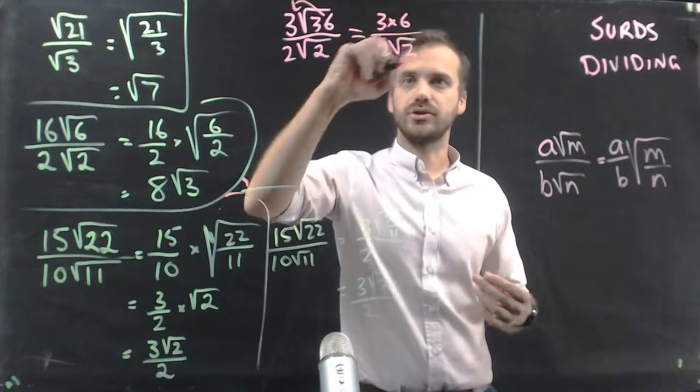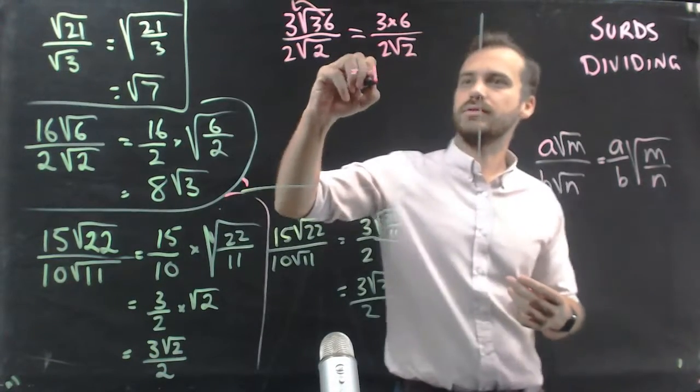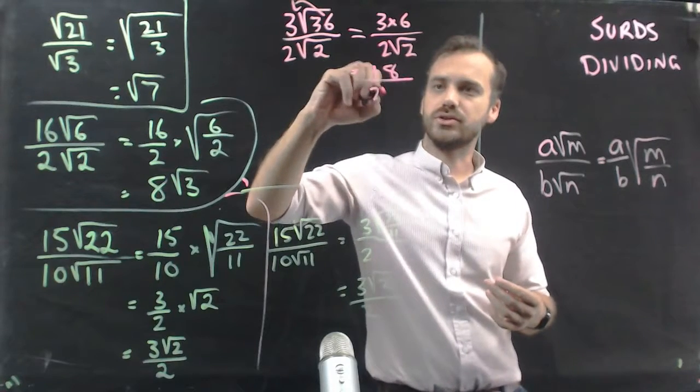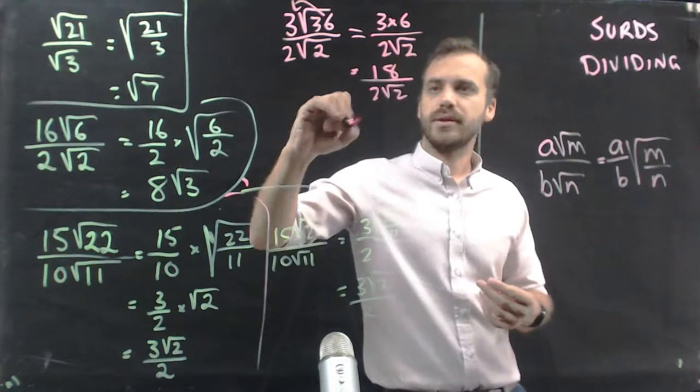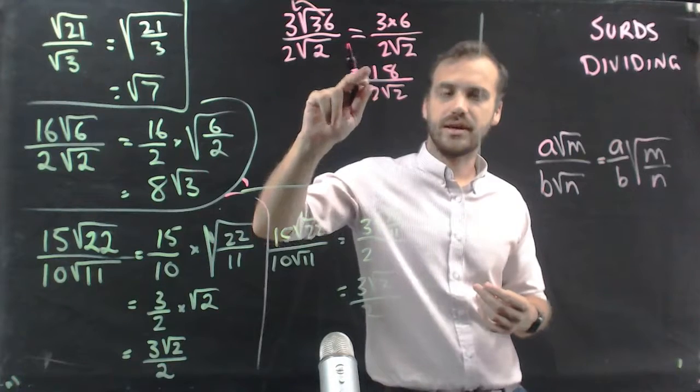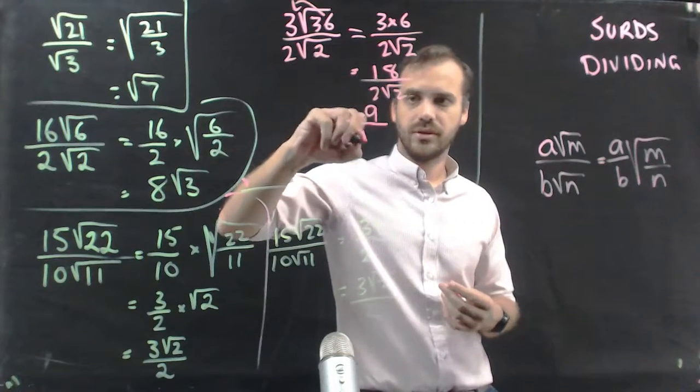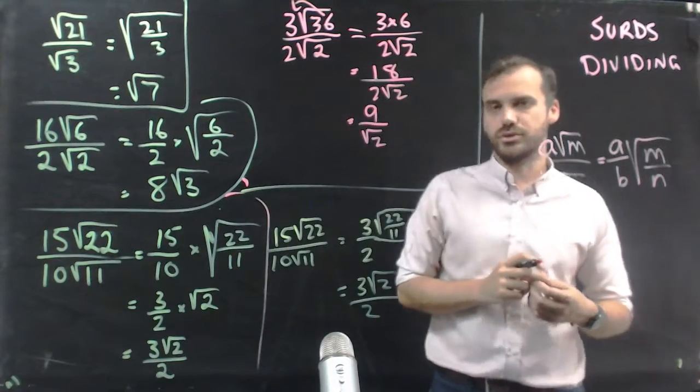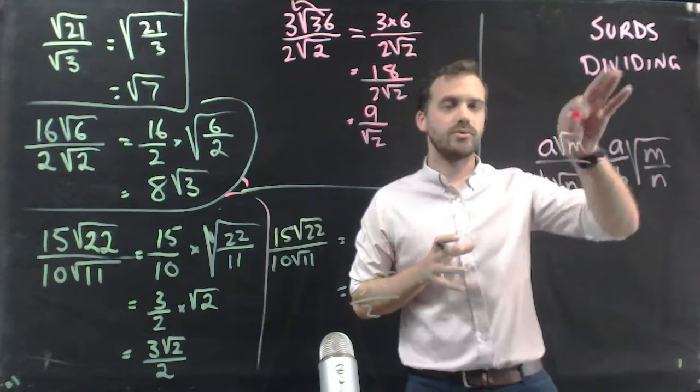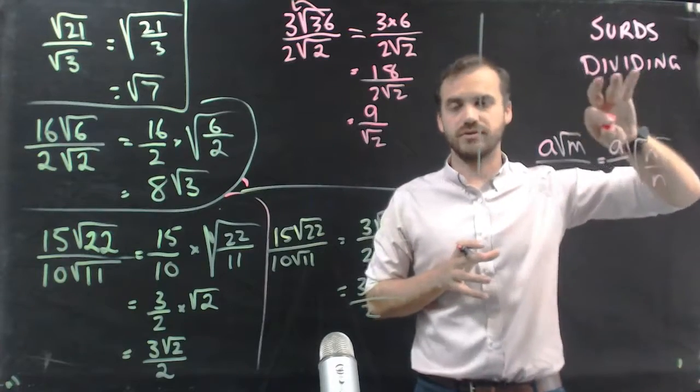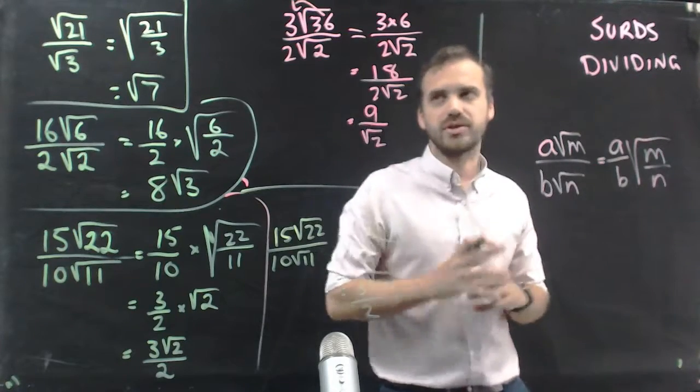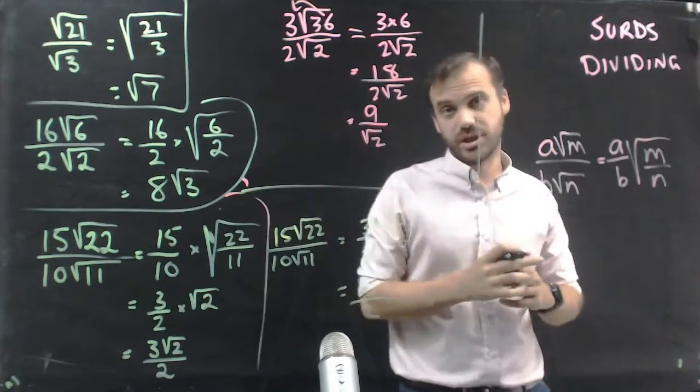Over 2√2. That'll give us 18 over 2√2. And then we can simplify these numbers out the front. 18 divided by 2 is 9. We end up with an answer of 9√2. So just be very wary when you're dividing surds that you might be able to simplify before you start.